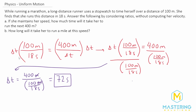Obviously you're looking at this and thinking that is a long process. 400 meters is four times 100, so 18 times 4 is 72 — a simple way to do it. But it is good to understand how to use ratios because it's not necessarily always so simple as that.